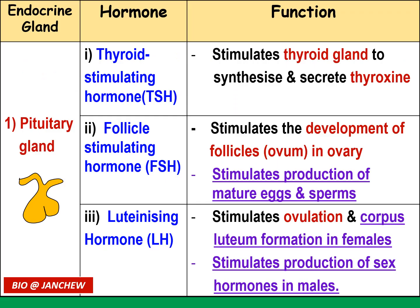Here are the functions of all eight hormones from the pituitary gland. Thyroid stimulating hormone (TSH) stimulates the thyroid gland to synthesize and secrete thyroxine. Follicle stimulating hormone (FSH) stimulates the development of follicles containing the ovum in the ovary, and stimulates the production of mature eggs and sperms. The additional functions underlined in the syllabus should also be noted — FSH stimulates the development of follicles so that ovum mature in the ovary.